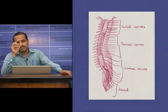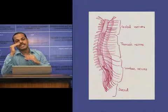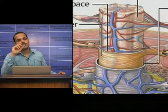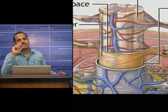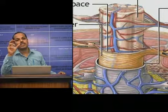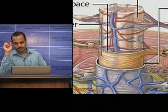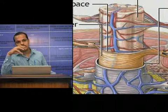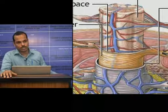Inferiorly, the dura mater ends at the filum terminale at the level of the lower border of the second sacral vertebra. The dural sheath lies loosely in the vertebral canal, separated from its wall by the epidural space containing loose connective tissue and internal vertebral venous plexuses. Dura mater extends along each spinal nerve root and is continuous with the connective tissue surrounding each spinal nerve — this is called epineurium.